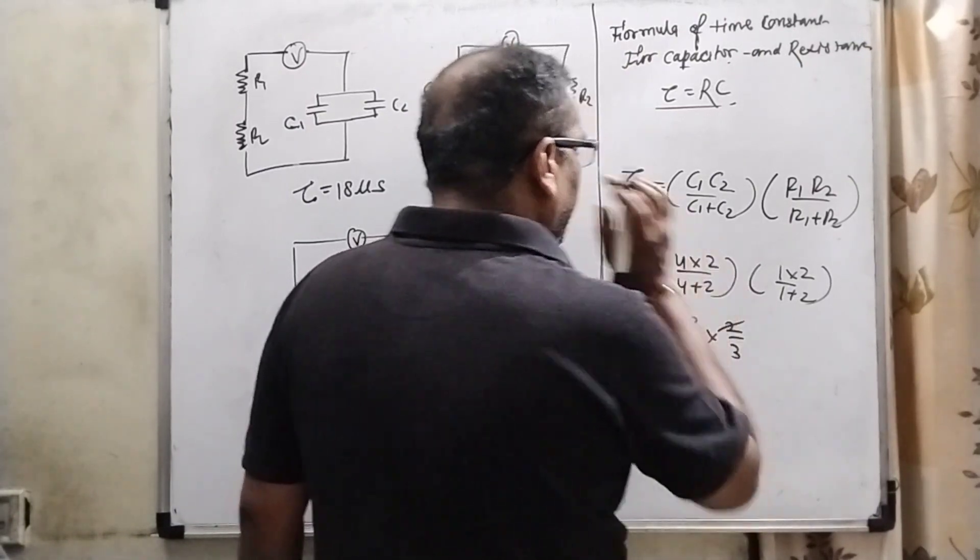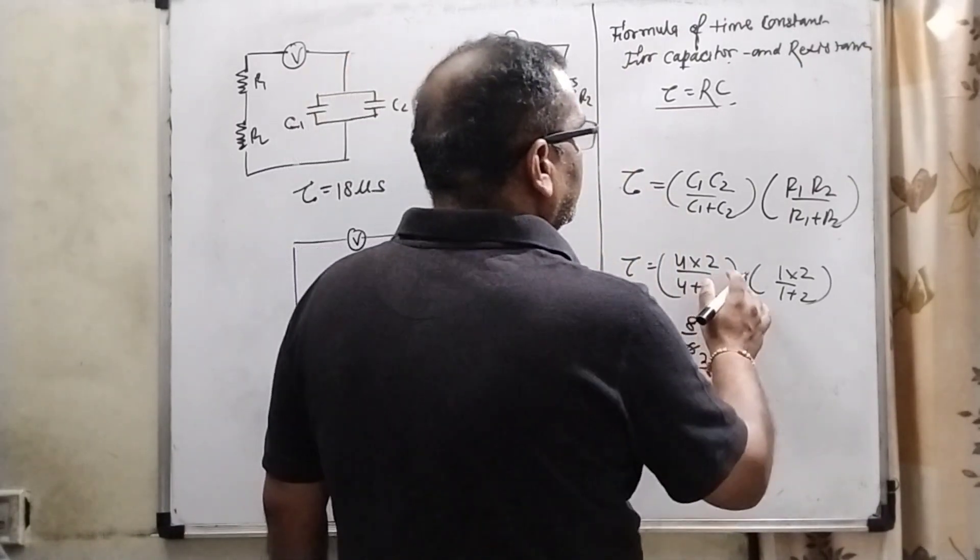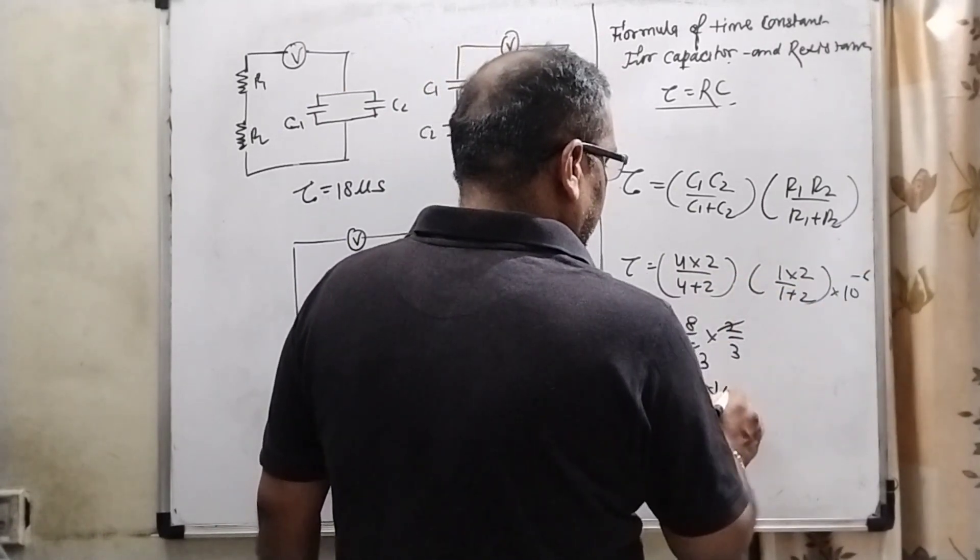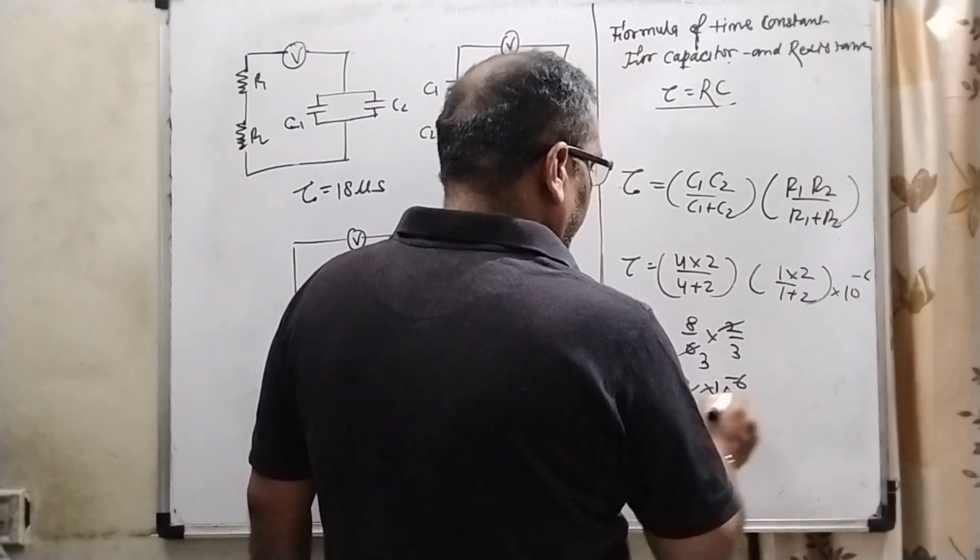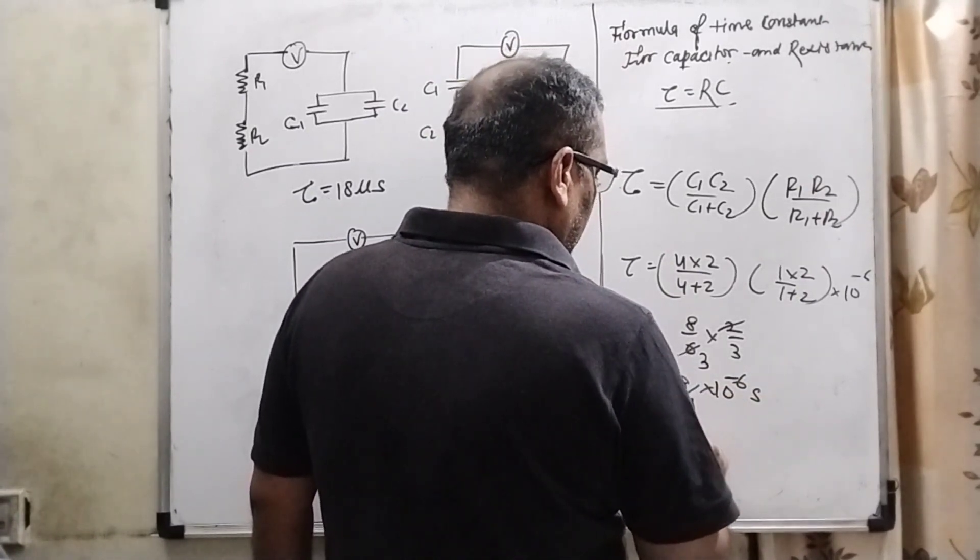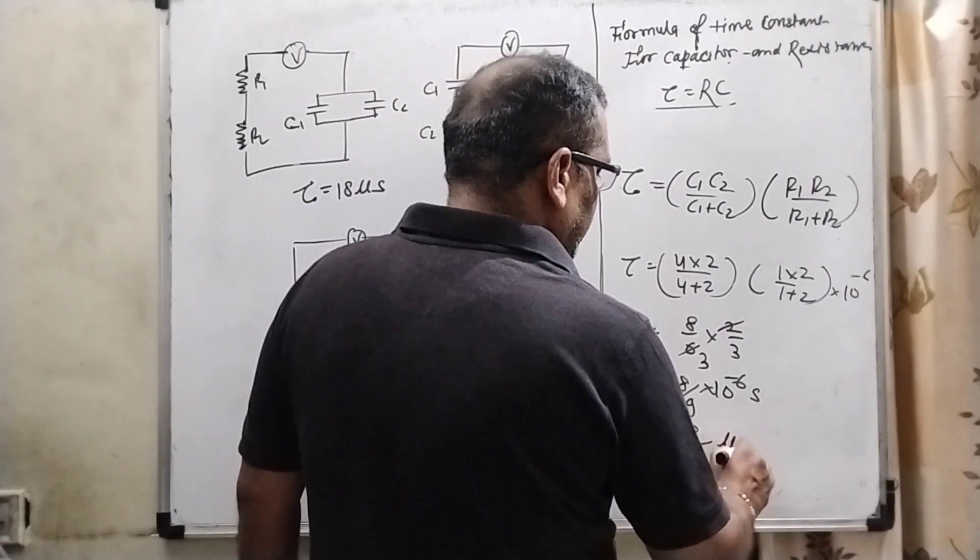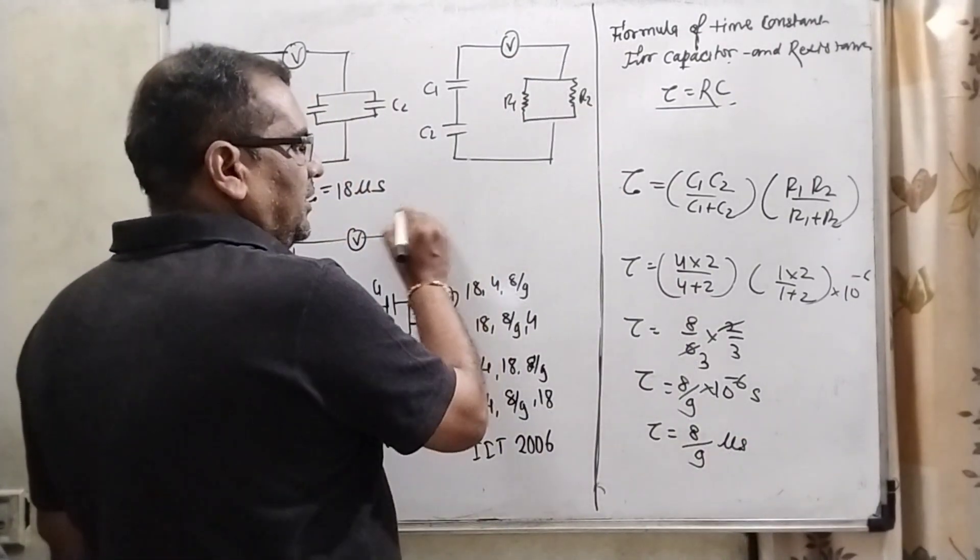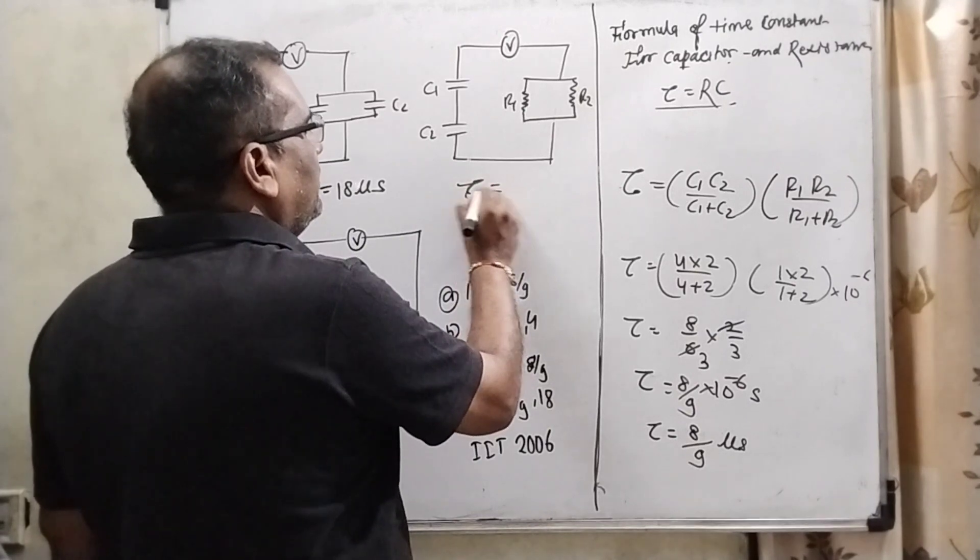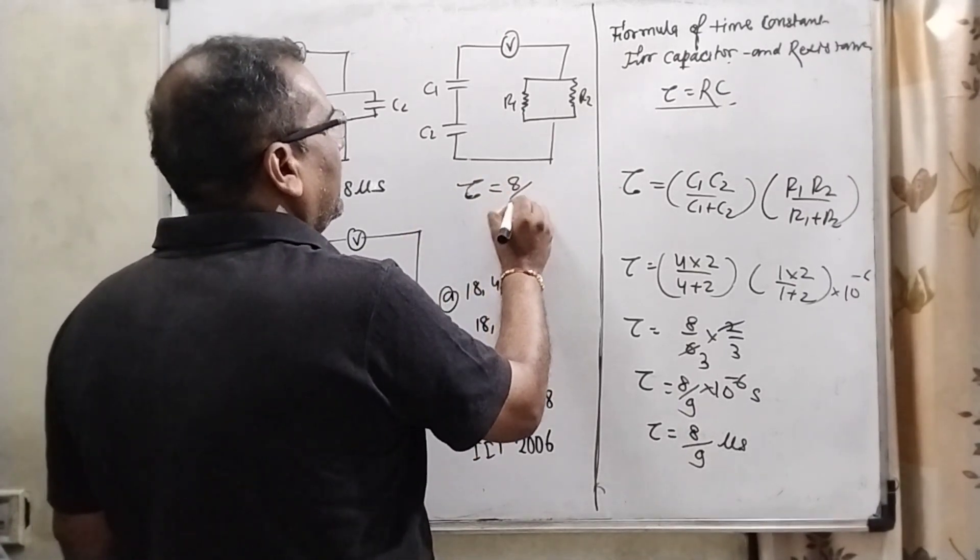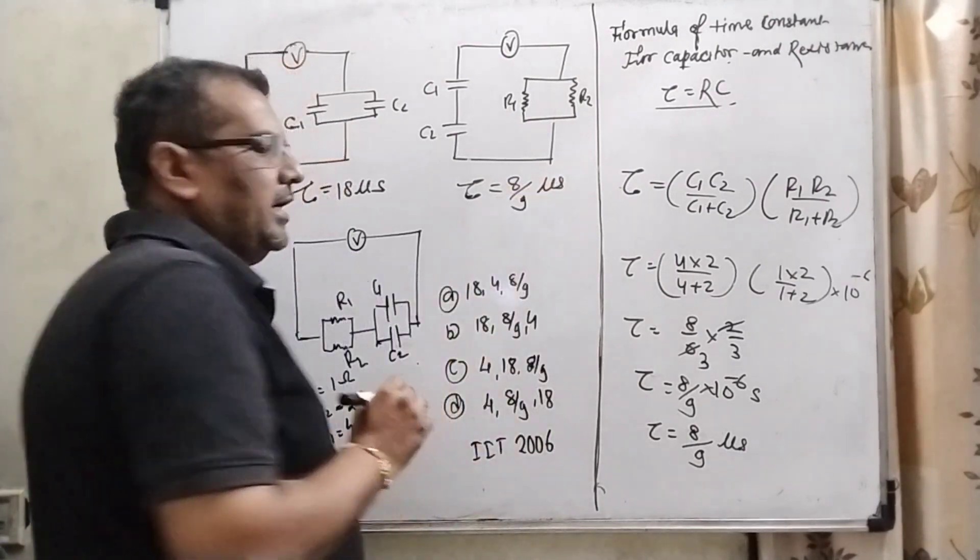And convert into 10 to the power minus 6, that is convert into microseconds, means 8 by 9 microseconds. For the second diagram, time constant tau equal to 8 by 9 microseconds.